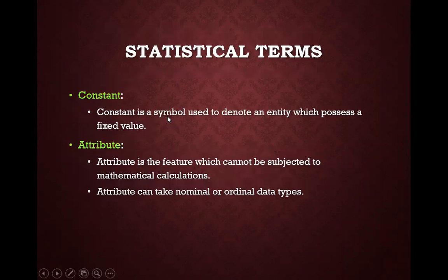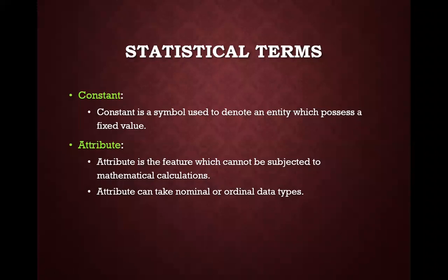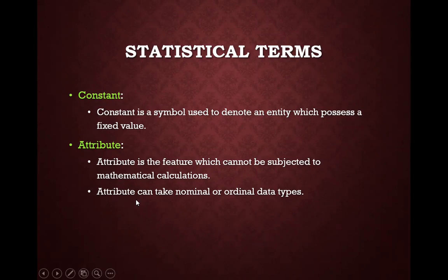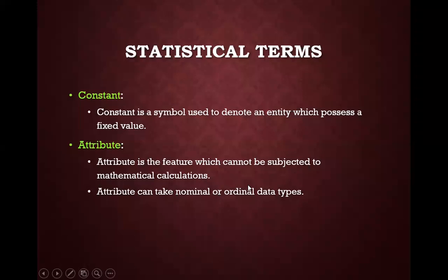A constant is a symbol used to denote an entity which possesses a fixed value — an example is pi, which has a particular value. An attribute is a feature which cannot be subjected to mathematical calculations. Attribute is a kind of variable which has qualitative information, and an attribute can be either nominal or ordinal data types.